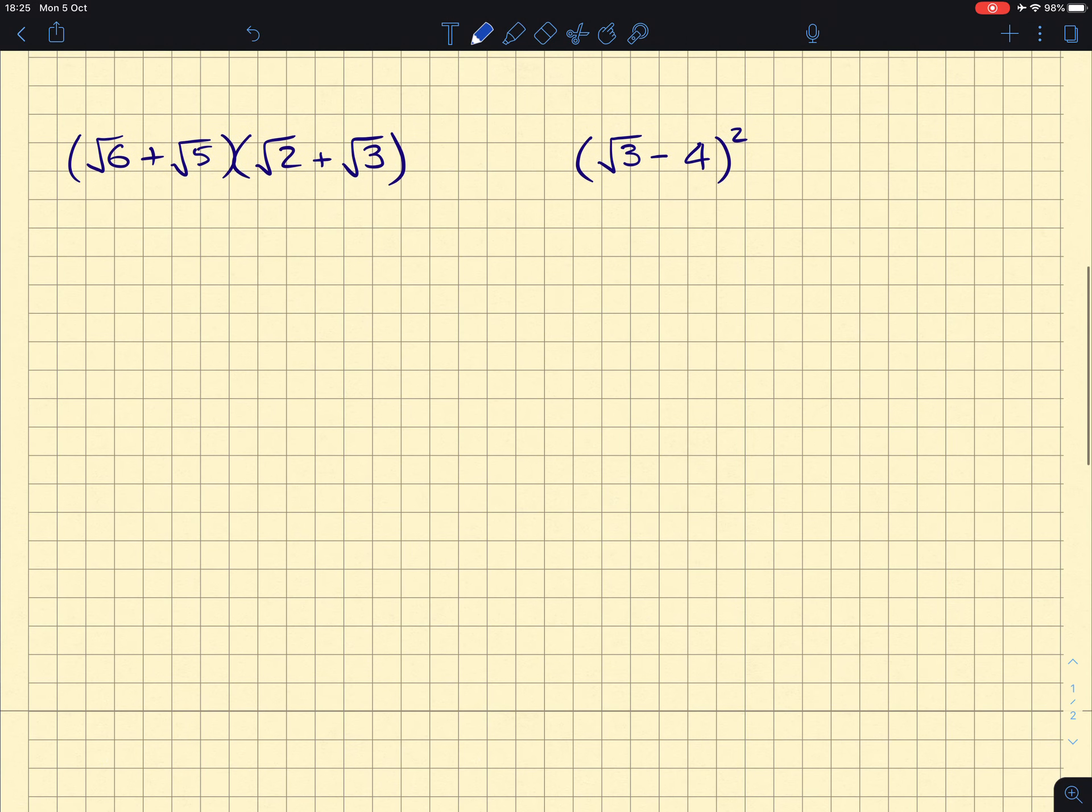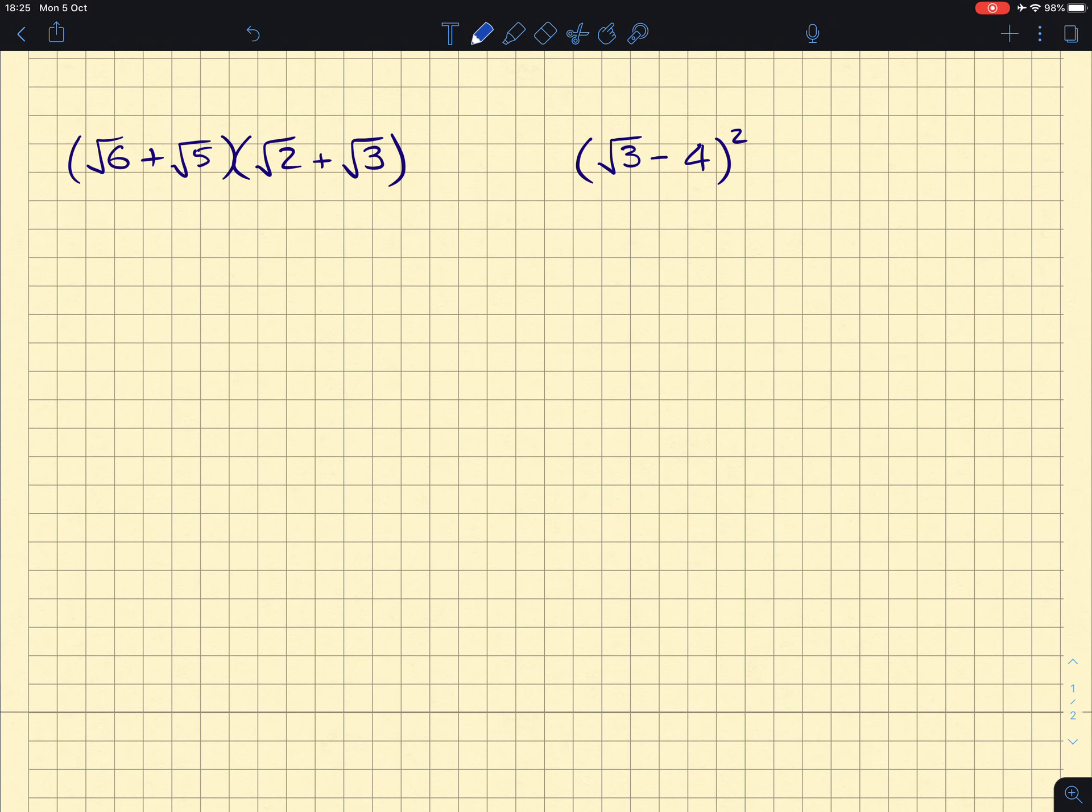Two more examples, another one with double brackets here. Do root 6 times root 2, which makes root 12. Root 6 times root 3, which will make root 18. A root 5 times root 2 makes root 10. And a root 5 times root 3 makes a root 15.